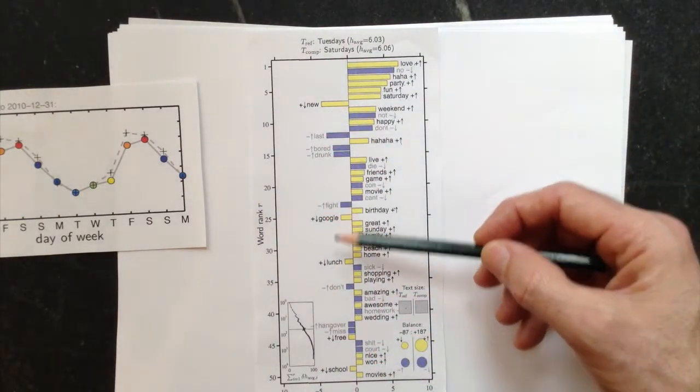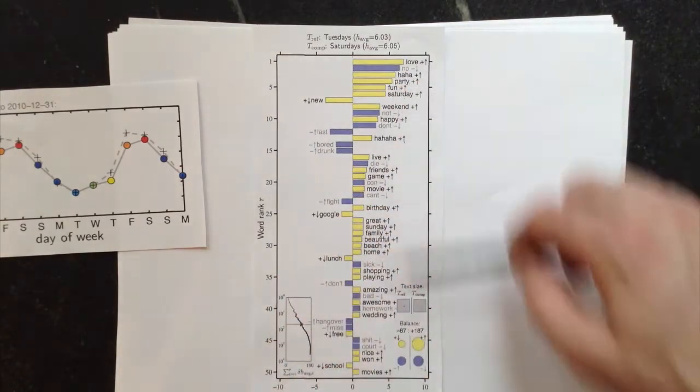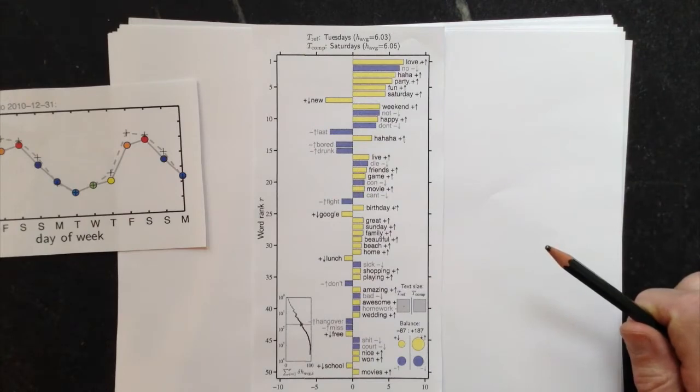There's a little more new, Google, lunch, free, so they're going the other way, so they're things that help Tuesday, but overall Saturdays are winning out.